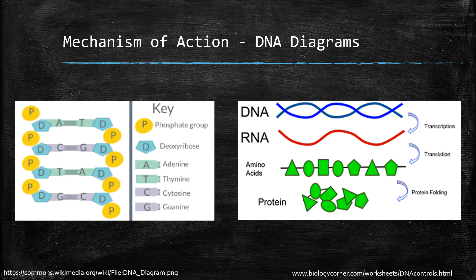Now adenine and guanine are purines, while cytosine and thymine are pyrimidines. That's important because in terms of azathioprine and mercaptopurine's mechanism of action, they act upon the purines only - so the A's and the G's - and they prevent their synthesis.